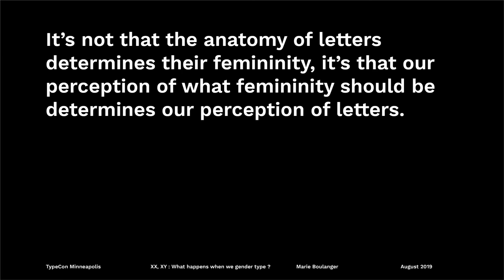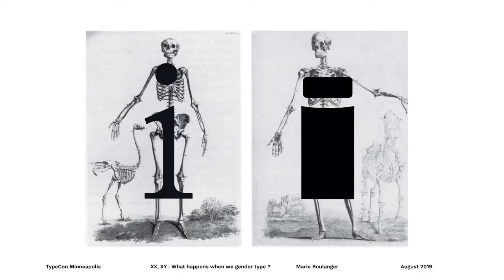So if I do this again one more time, I hope the first slide makes even more sense now. And I hope that you've gained some insight into how, where, and why we gender type and what happens when we do. Now, moving on to the better question: what happens when we stop?